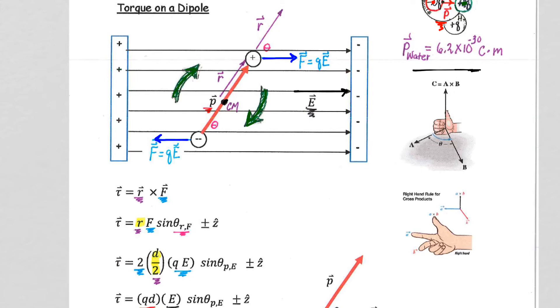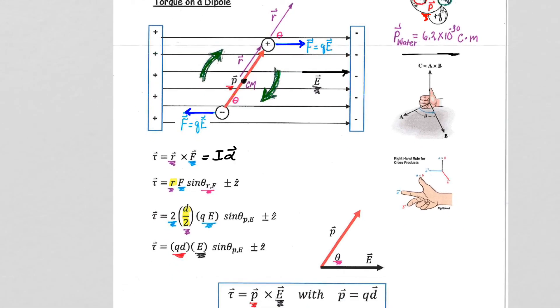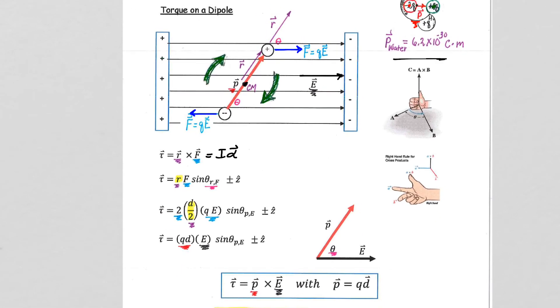Remember, torque equals I alpha. We're not really going to use I alpha for this course, but from mechanics we remember torque equals I alpha. The strength of that rotation, the angular acceleration, is dependent on the torque. I hope we can follow the math shown here. Torque equals R cross F, and remember that our right-hand rule applies.